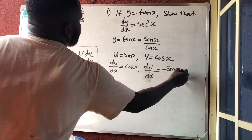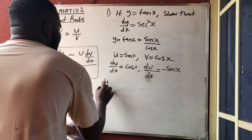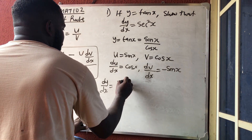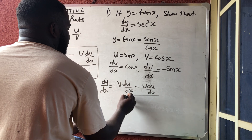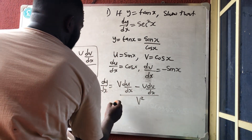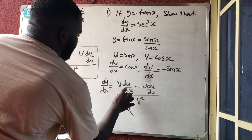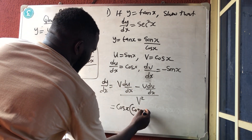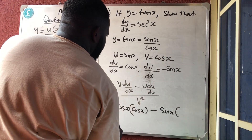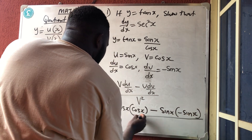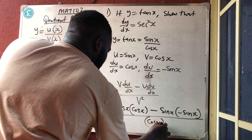So du/dx equals cos x, and dv/dx equals minus sin x. Now applying the quotient rule formula — start from the denominator and end in the denominator — dy/dx equals v·(du/dx) minus u·(dv/dx), all over v squared. Substituting: v is cos x, du/dx is cos x, minus u which is sin x, times dv/dx which is minus sin x, all over v squared which is cos²x.